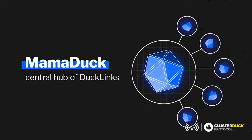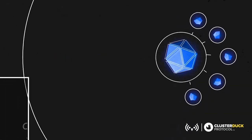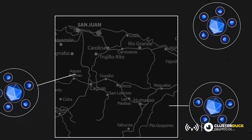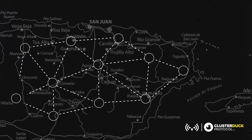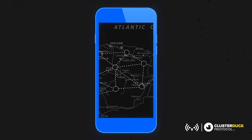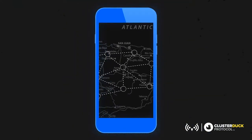The ClusterDuck Protocol is an open-source firmware for mesh network devices that can be loaded onto a variety of small electronics or IoT boards to quickly turn those devices into a duck — a mesh network node that can be customized, integrated with sensors, and is ready to wirelessly connect with other ducks in range to form a mesh network.